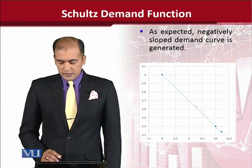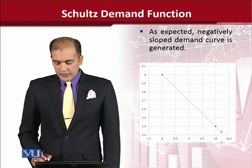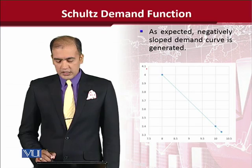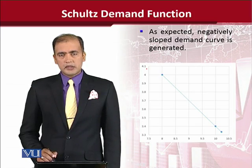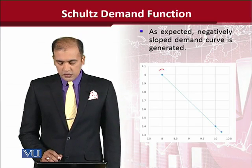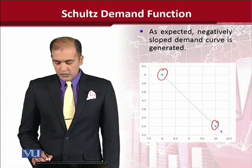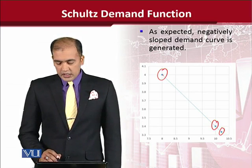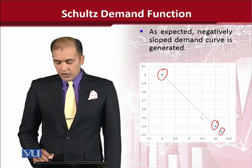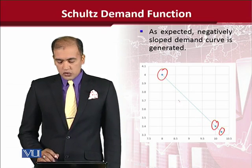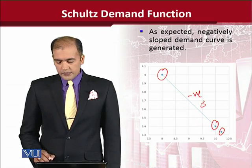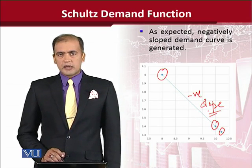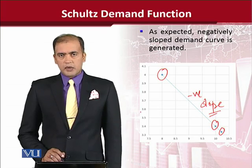We have chosen the first quadrant of x and y, as we know both values are positive. These are the points we just calculated. Joining these points, we get a line which shows a negative slope. A negative slope is what we expect from the law of demand.